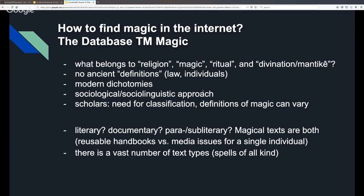We couldn't base our definitions on the ancient cultures themselves, on their law books, or on individuals such as Cicero or Plato, who gave definitions right for their context but don't say much to our terms. The modern dichotomies from old literature were also very problematic — so we opted for a sociological or sociolinguistic approach. One key distinction in the database is whether a text is literary or documentary. A literary text is, for instance, a magical handbook that could be reused — the PGM would fall under this category, as handbooks that priests had in temples and tombs and could consult again and again, like reference books. Documentary magical texts, by contrast, were issued for an individual and are only important in that individual's context.